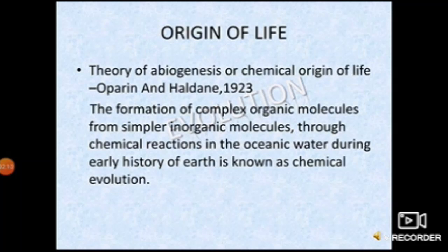The origin of life is explained by the theory of abiogenesis, or chemical origin of life, by Oparin and Haldane. In this theory, scientists believe that at the time of formation of the earth, it was like a fireball. At that time, free atoms were present on primitive earth, like hydrogen, oxygen, carbon, nitrogen, etc. These free atoms combined to form different molecules. And in primitive earth, there was no free oxygen — that is, the atmosphere at that time was a reducing atmosphere.